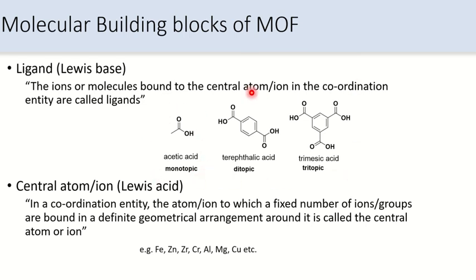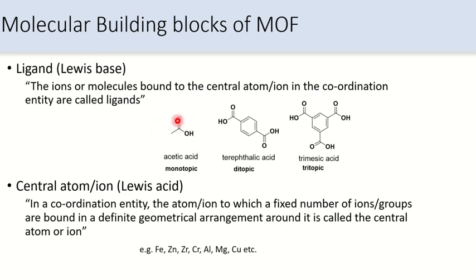For example, consider three types of ligands: monotopic, ditopic, and tritopic. To form a linear chain or three-dimensional network, we need to use either ditopic or tritopic ligands. As you can imagine, the metal-ligand framework extends with these. Monotopic ligands cannot extend the structure — it is arrested in only one direction. They are generally used as modulators to modulate the size, porosity, and shape of the framework. These modulators are also called shape-directing agents.